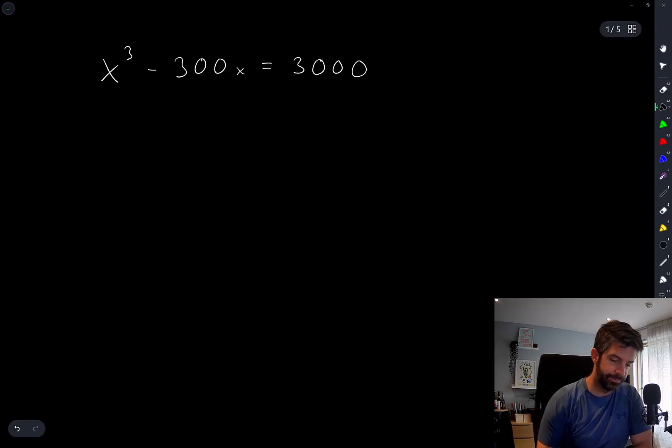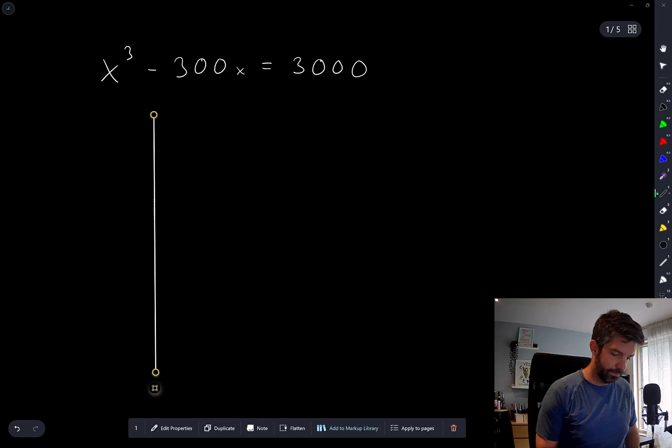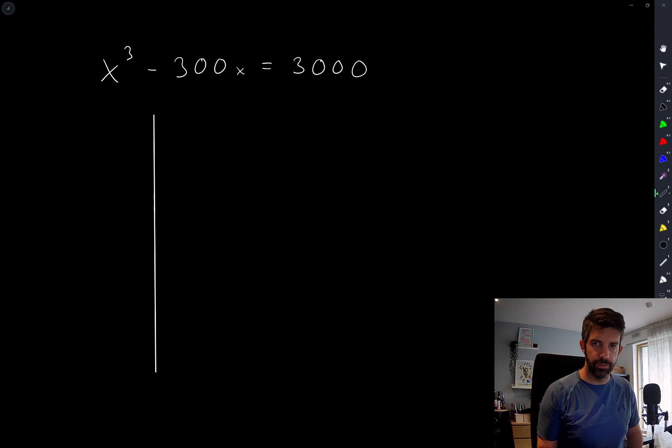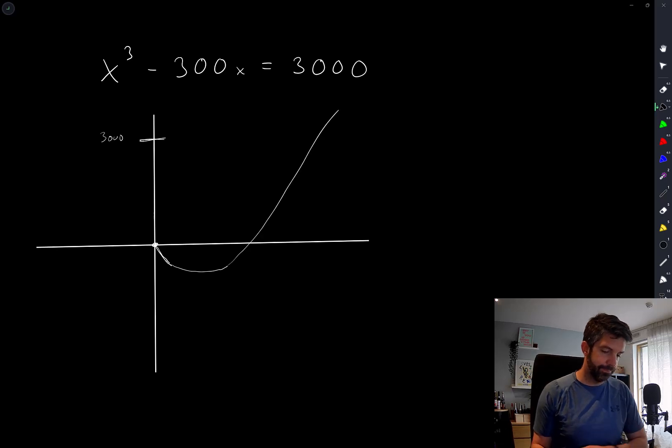My intuition is that it's going to be one real solution, because of the graph of the function. But of course we have to worry about negative values of x. Let's consider first only positive values of x. I'm going to think of the left-hand side as being a function of x. The value 3000 is way up here, I want to know when I cross that line. For small positive values of x, the graph looks like this, but eventually, when x cubed starts to dominate, it'll turn around and do something like that. So there will be only one value of x which is positive which satisfies this.